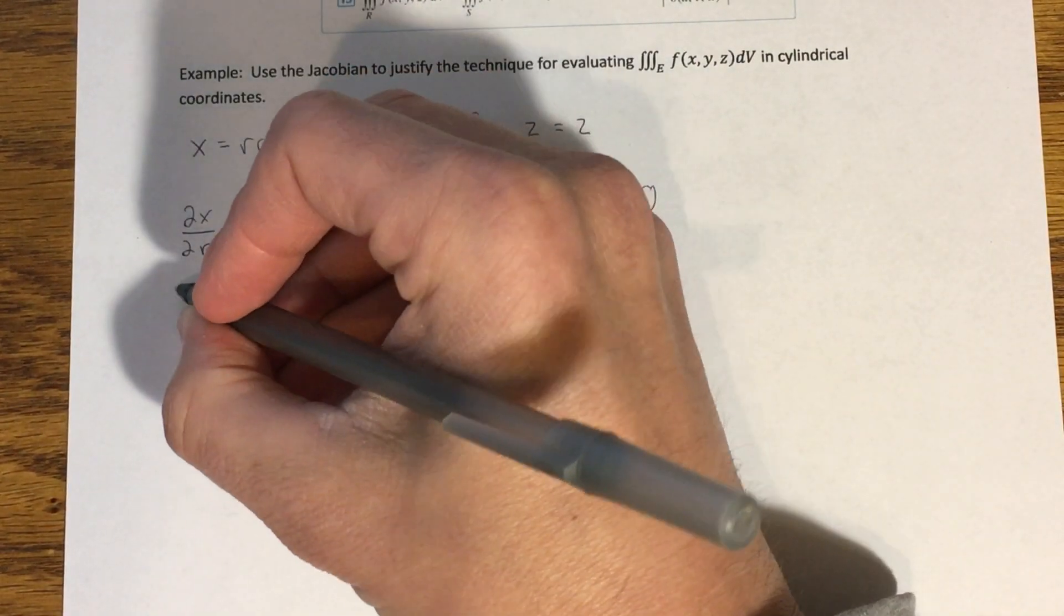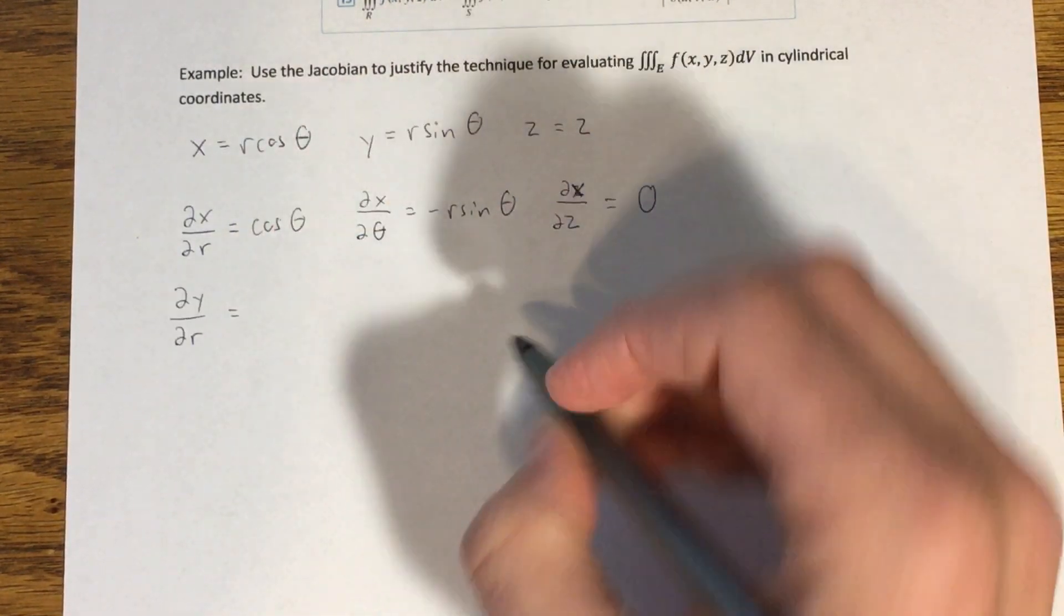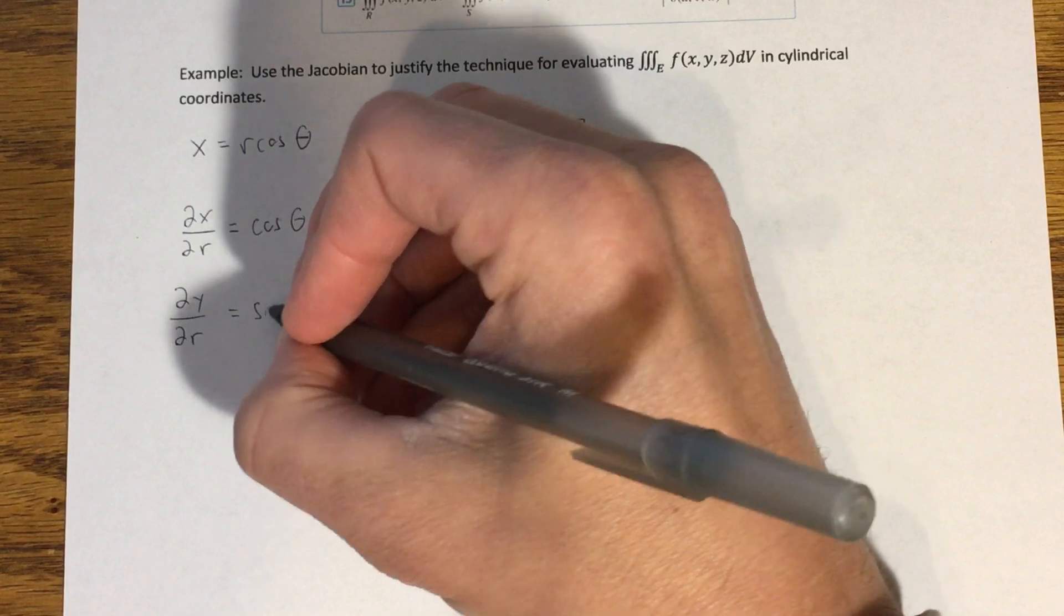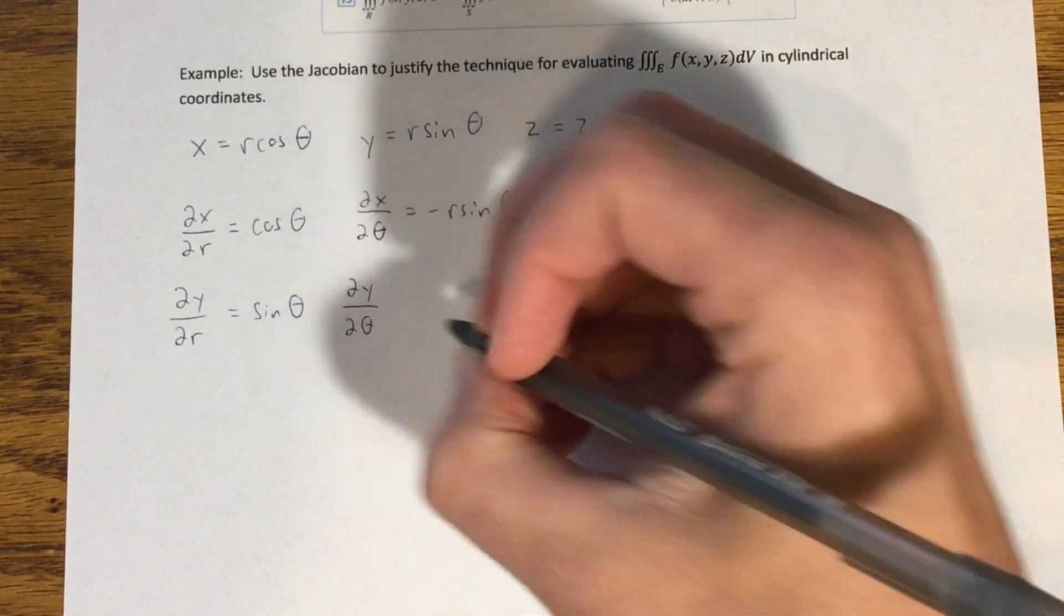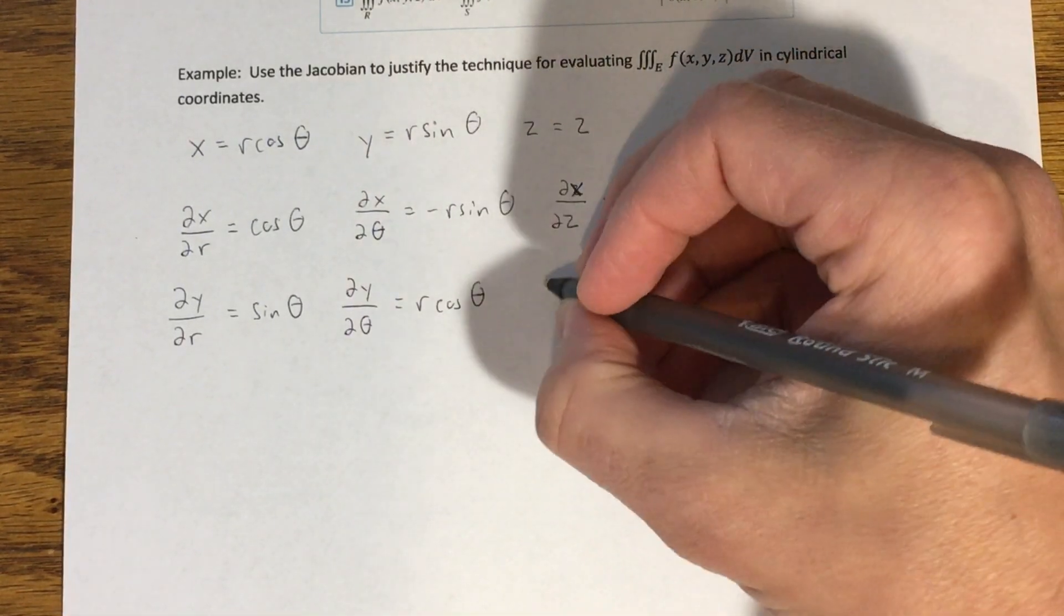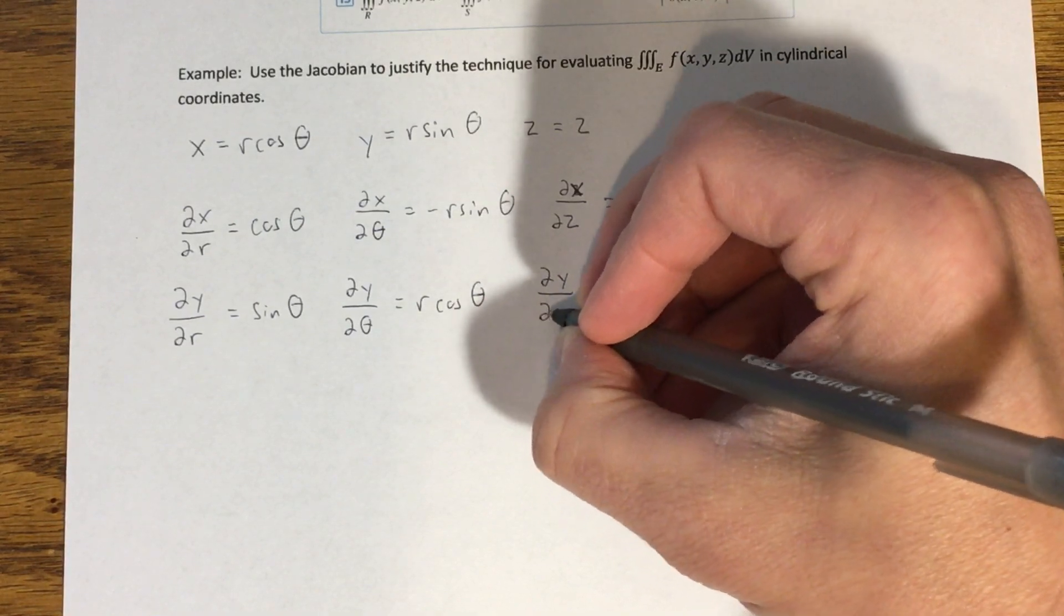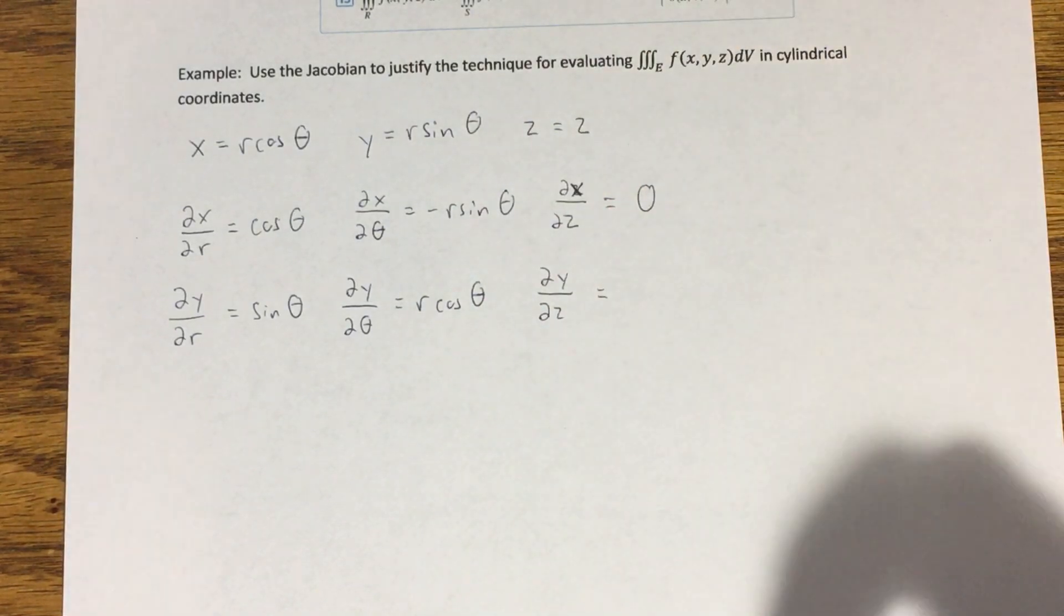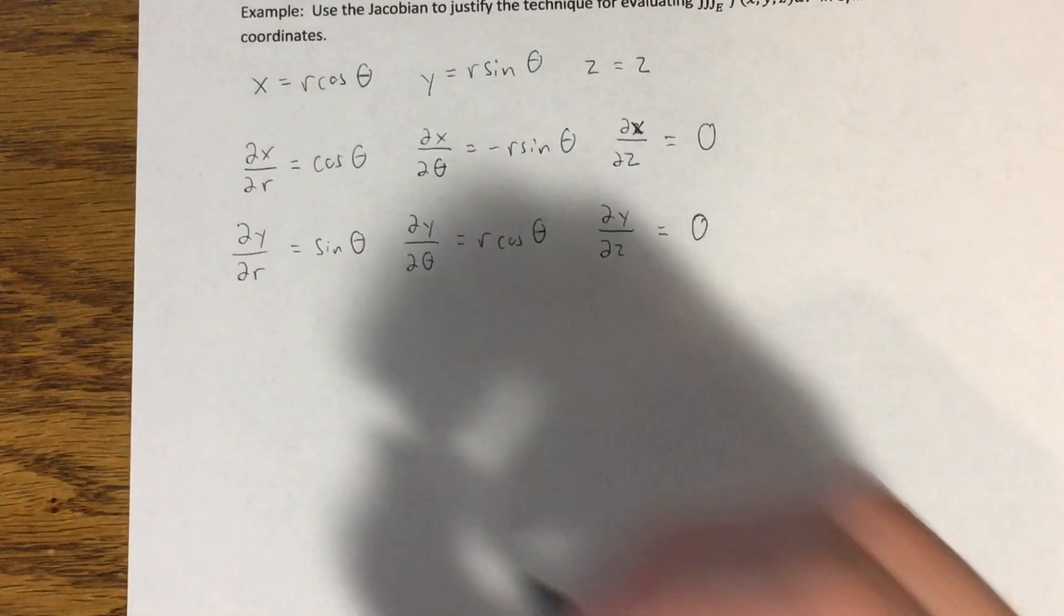Okay? Then we do the y's. Partial of y with respect to r is going to equal sine of theta. Partial of y with respect to theta is r cosine of theta. Partial of y with respect to z. Once again, there is no z there, so that's treated like a constant, and we get zero.